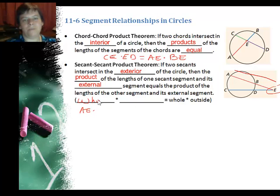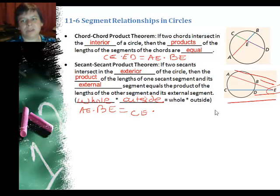times the outside segment, segment that is not inside the circle, in this case that would be BE, equals CE times DE. So it kind of reminds you of those similar triangles we were doing. It's not the same thing, but it sort of reminds you of it. Now notice that there's an E on every one of these as well. So whatever your point is, it should be on each segment. Whole times outside equals whole times outside.